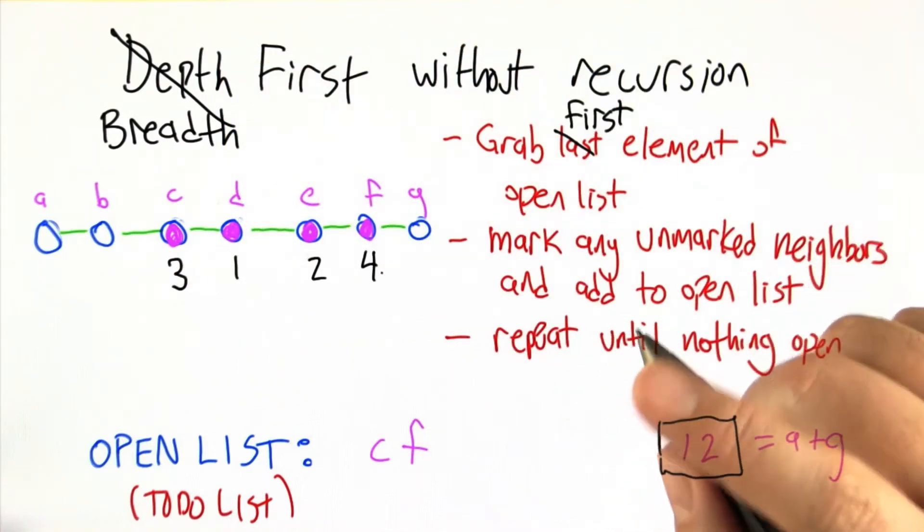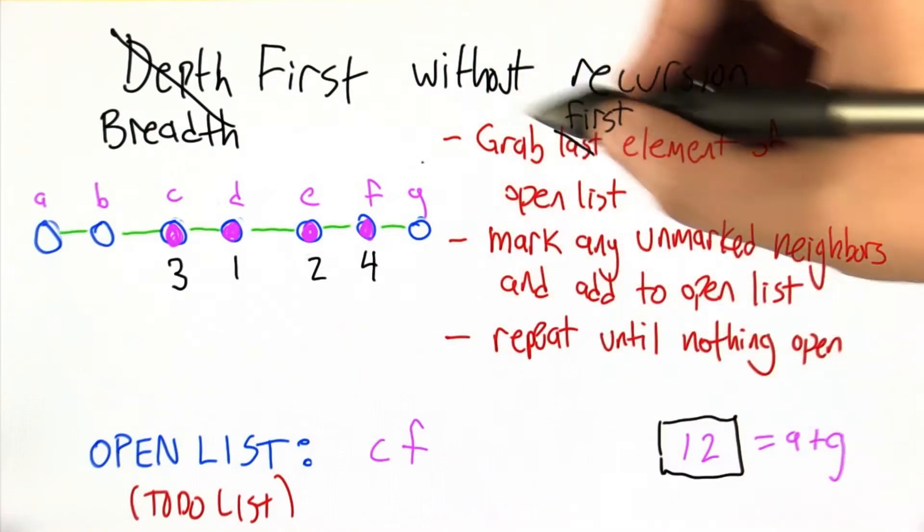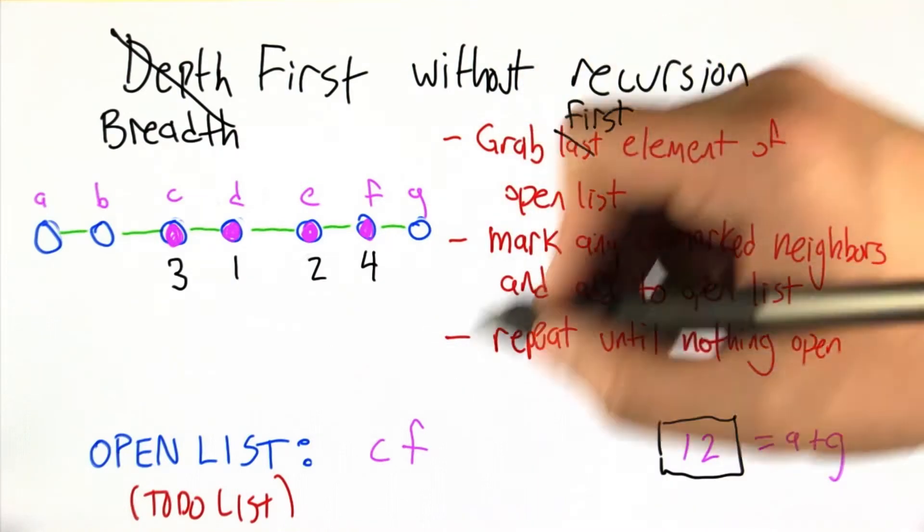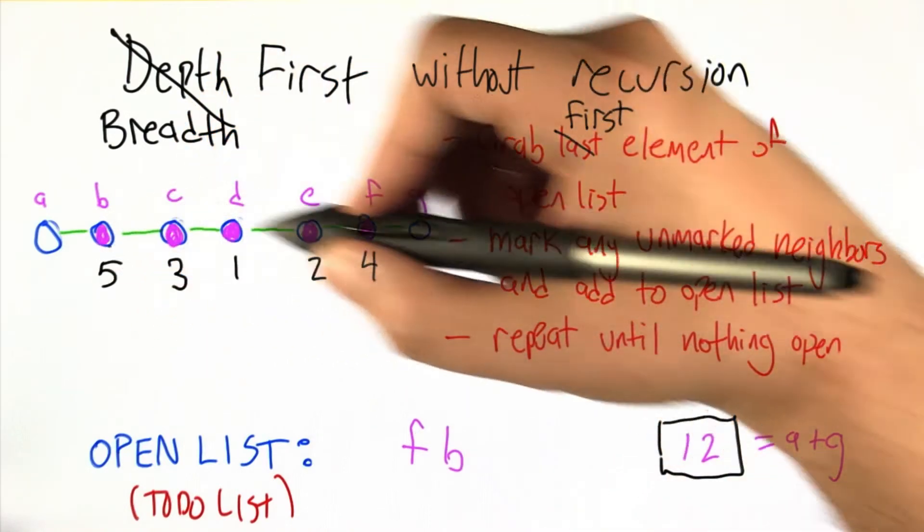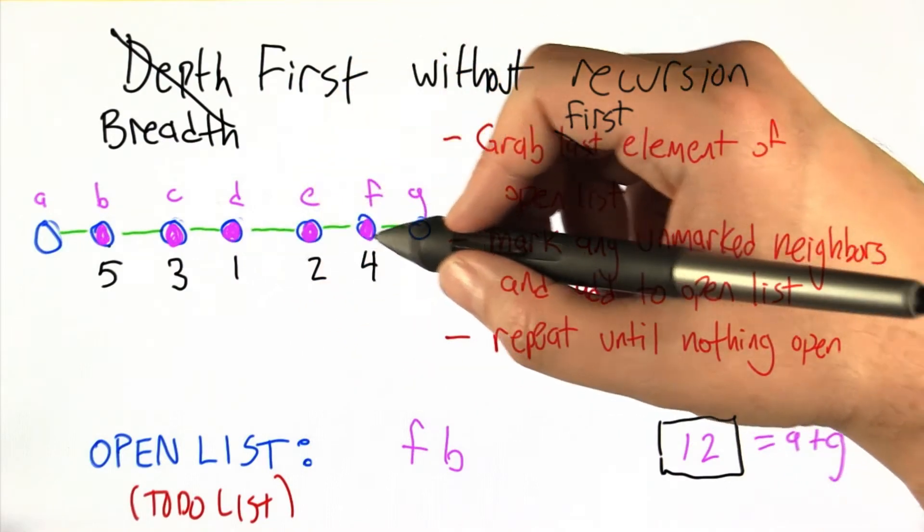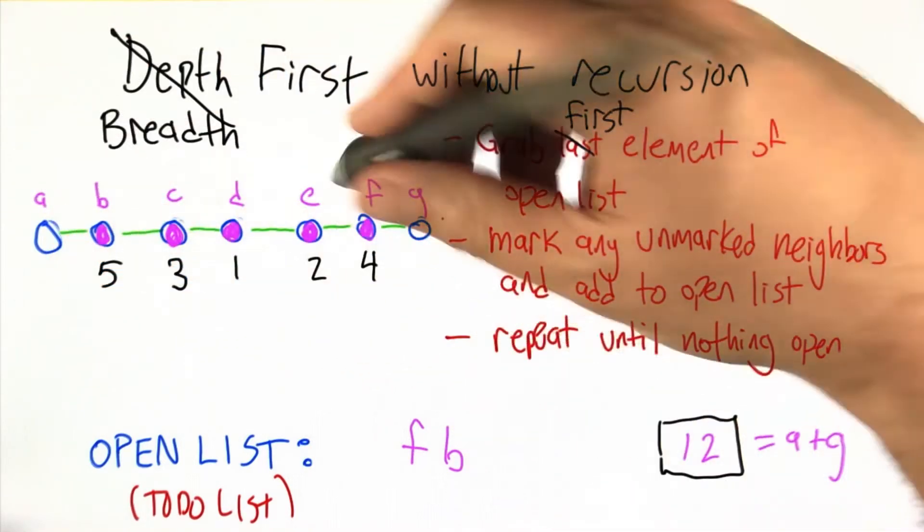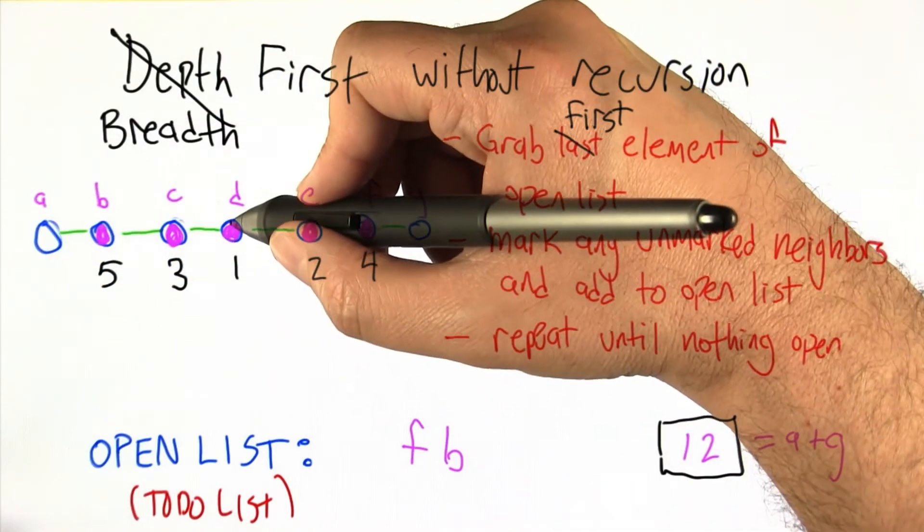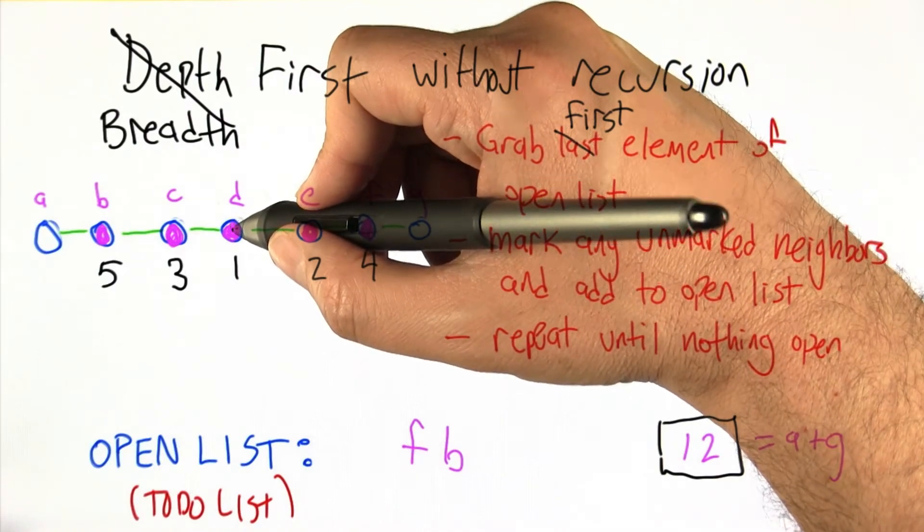But now is where it gets even differenter. We go back up to the top and we grab the first element off the list, which in this case is C. So we alternated and instead of continuing in one direction, we're actually expanding outward from D. We did D and then C and E and then B and F.